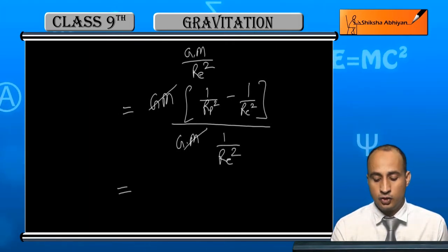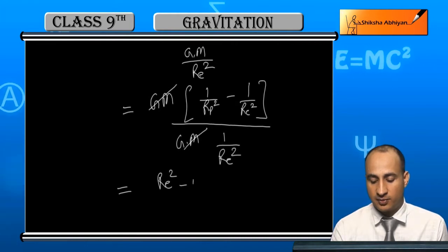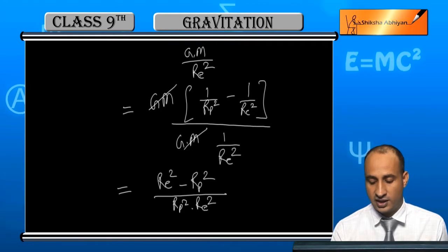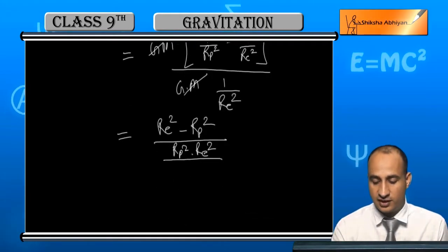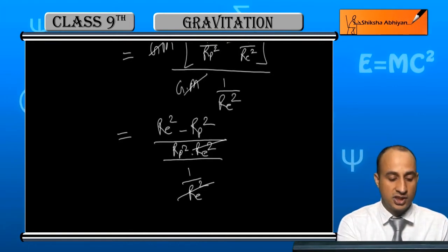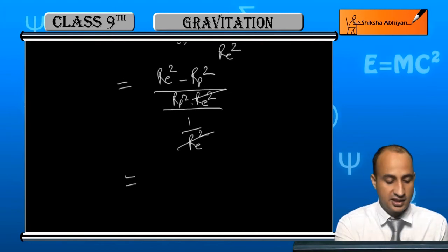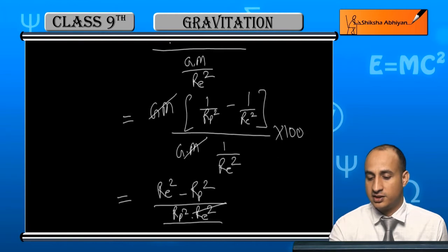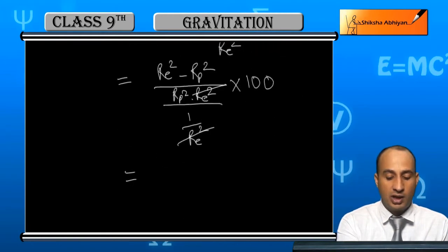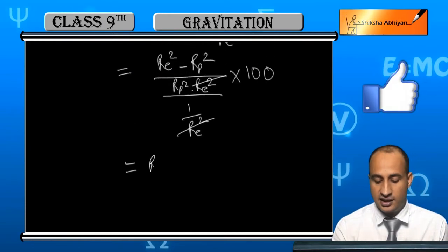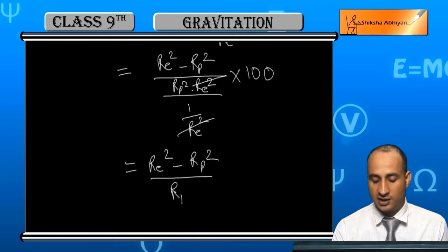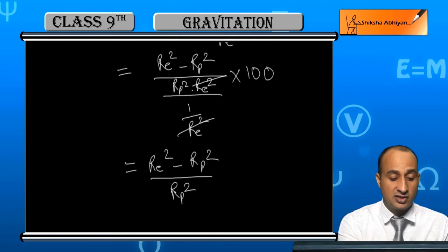After cancellation, the numerator becomes RE squared minus RP squared, over RP squared times RE squared. Dividing by 1/RE² in the denominator simplifies things, and finally the percentage change equals (RE minus RP) upon RP squared, multiplied by RE, times 100.